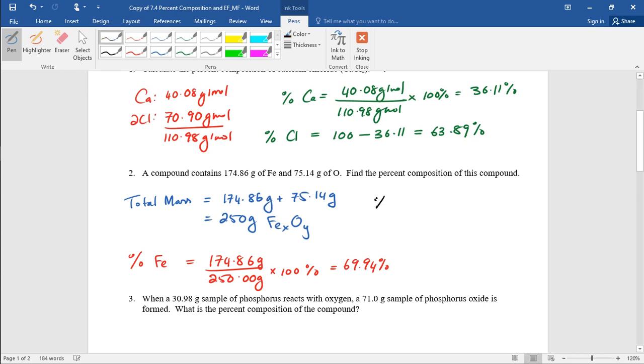How do you find the percent of oxygen? You just subtract 69.94% from 100. So 100 minus 69.94 gives us 30.06% oxygen.